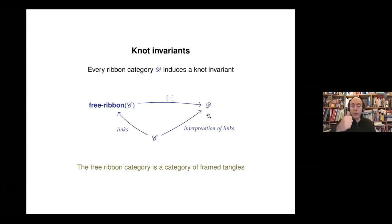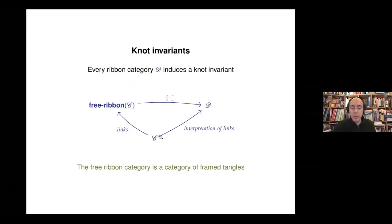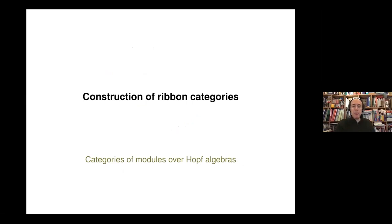The free ribbon category has the beautiful property that every time we have a ribbon category D and a functor from C to D — giving an interpretation to each of the links — we can lift this functor to one where framed tangles, modulo deformation, are interpreted as morphisms of D. This is a way to construct many invariants of knots in topology.